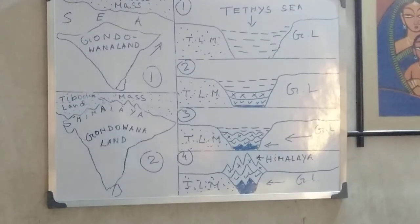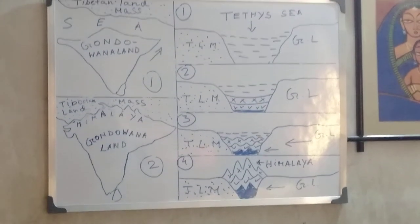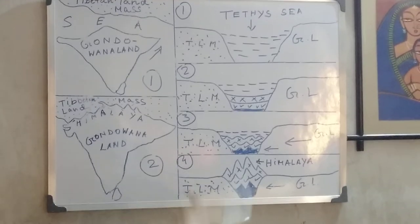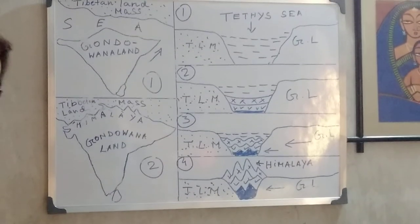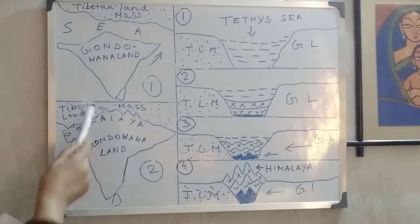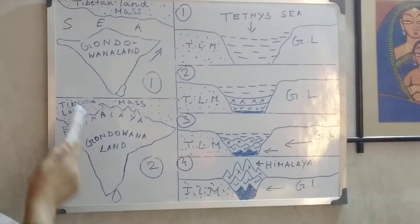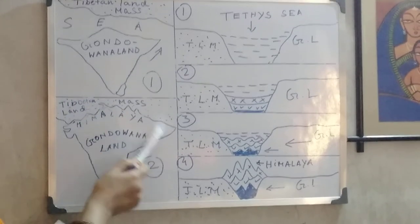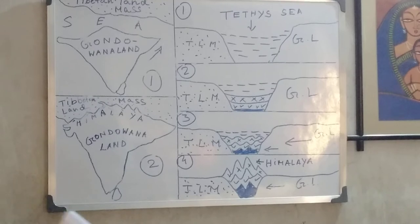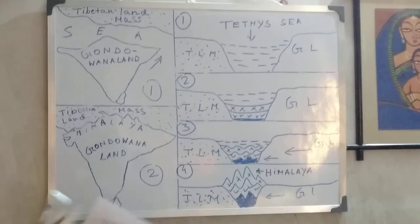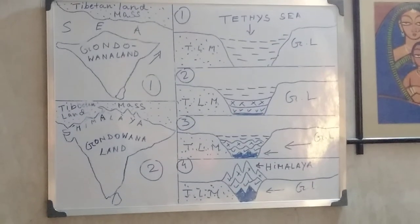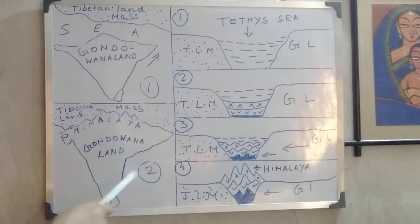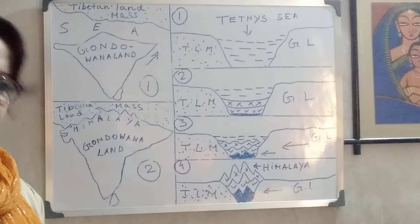In this way, the Himalaya - a young fold mountain - came into form and uplifted. The denudation of the Himalayan land and peninsular India, and further deposition of sediments by the rivers, resulted in the formation of the northern plains. The Himalaya is still being uplifted as this process continues.